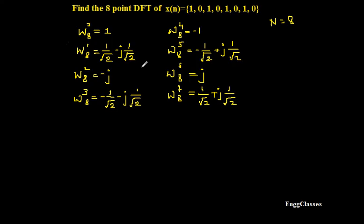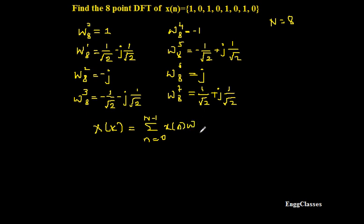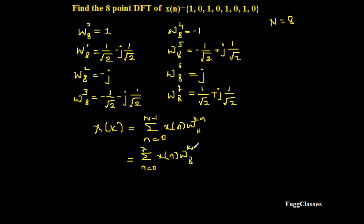So once we know how to find these twiddle factors, next I can find the DFT which is X(k). The formula is the summation from n=0 to N-1 of x(n)·W_N^(kn). In this expression I will put N=8, so n goes from 0 to 7, giving W8^(kn).